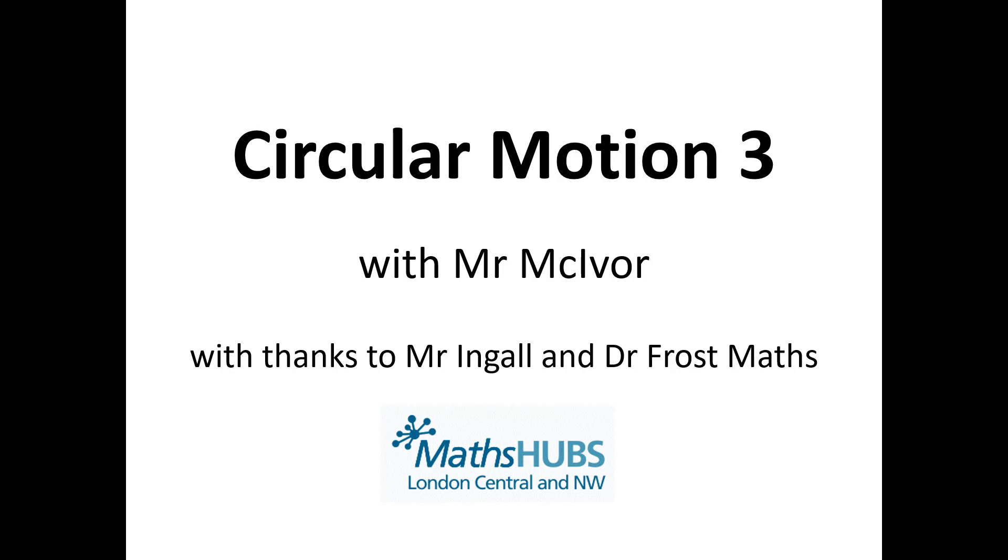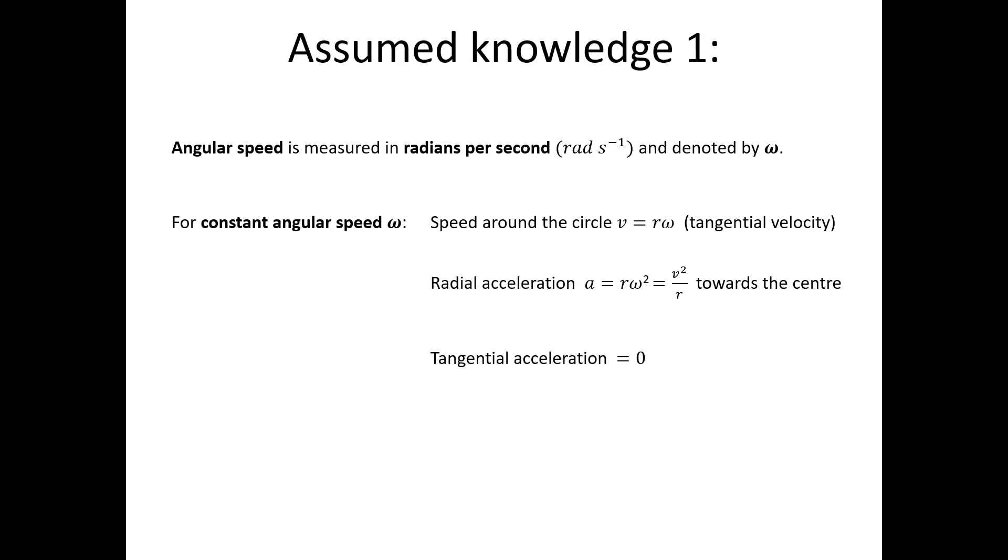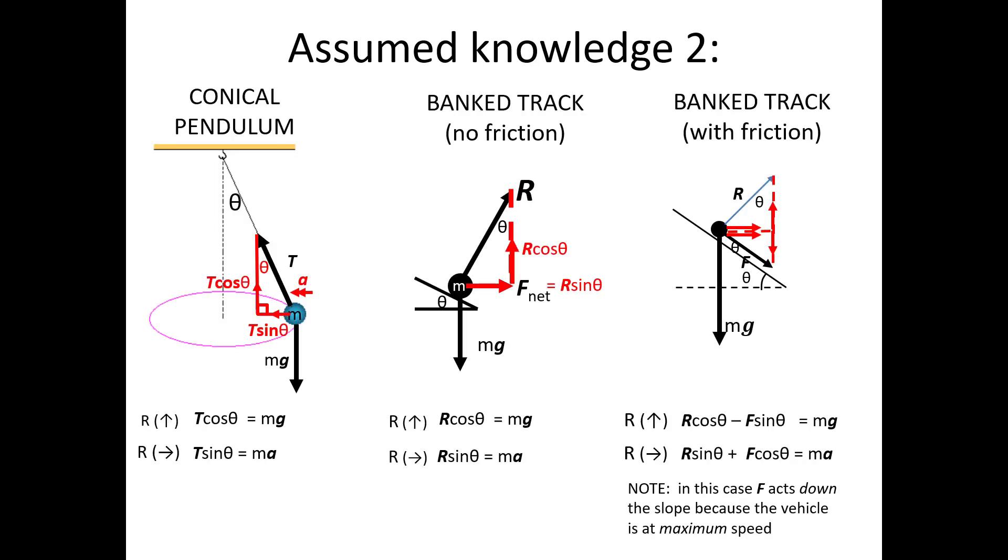Now let's move straight on to what I'm assuming you already know. I presume you already know what constant angular velocity is and how this relates to the basic equations of horizontal circular motion. Second, I'm presuming you already know about conical pendulums and the motion of objects on banked tracks.